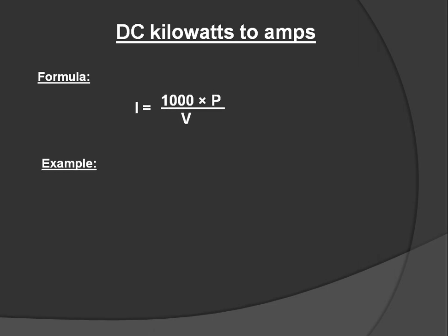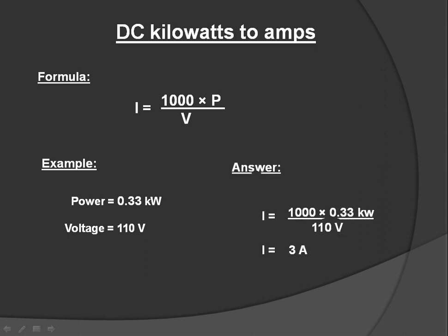Let's see an example. We have some values: power equals 0.33 kilowatts, voltage equals 110 volts. Put the values in this formula. The answer is 3 amperes.